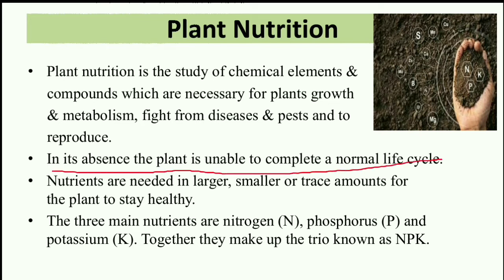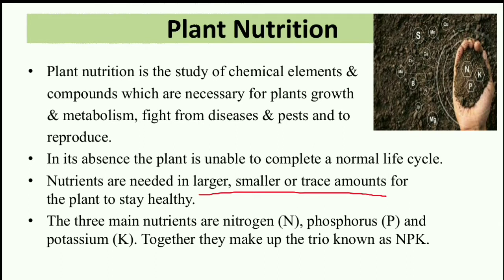In the absence of plant nutrients, a plant is unable to complete its normal life cycle. The nutrients required by plants can be in larger, smaller, or trace quantities. Basically, the three main nutrients are nitrogen, phosphorus and potassium. Plants mainly require these three nutrients, and together they make up the trio known as NPK.